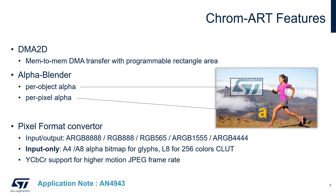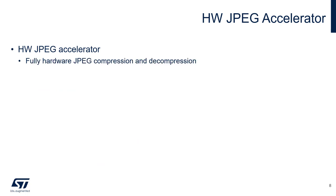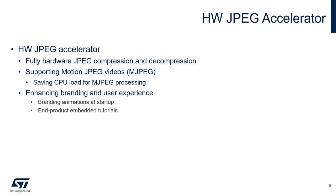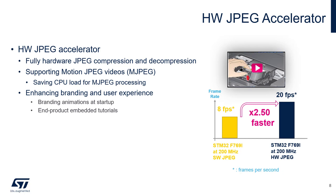All the details of ChromArt can be found in application note AN4943. The hardware JPEG accelerator is a fully hardware JPEG compressor and decompressor, and it supports motion JPEG videos. It offloads the CPU for motion JPEG processing. Motion JPEG is mostly used for short videos, such as tutorials to replace ink cartridges in printers. Using the hardware JPEG decoder, you can go from 8 frames per second up to 20 frames per second. The application note dedicated to the JPEG accelerator is AN4996.